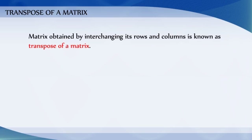In other words, if A is equal to matrix AIJ of order M by N, then A transpose is equal to matrix AJI of order N by M.